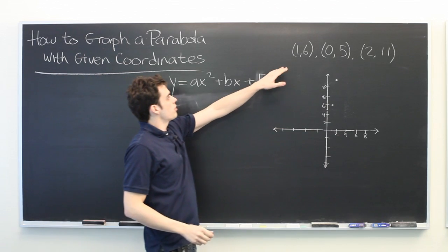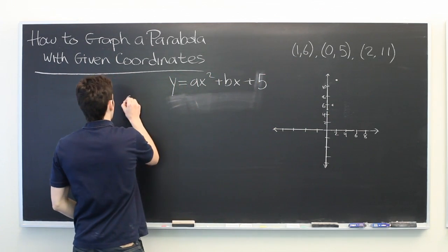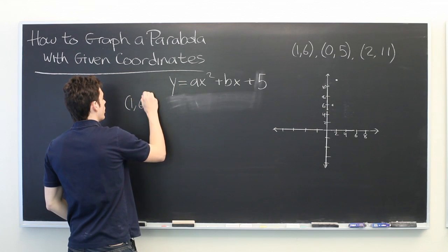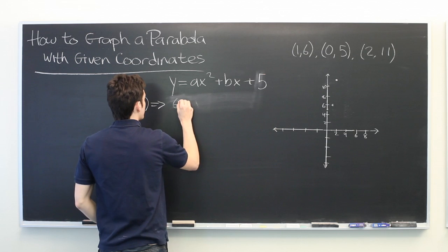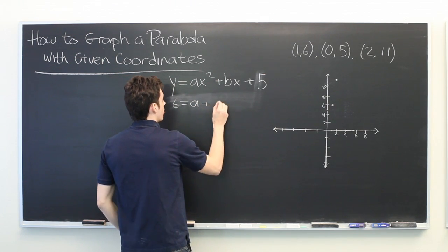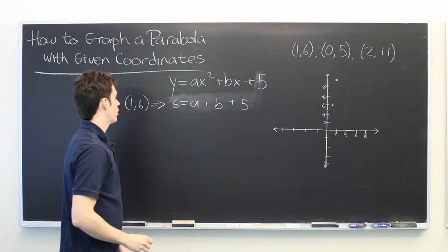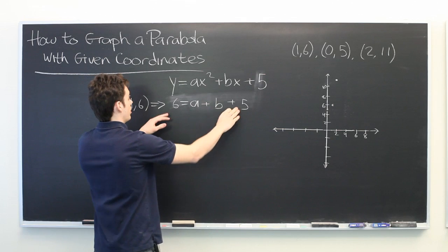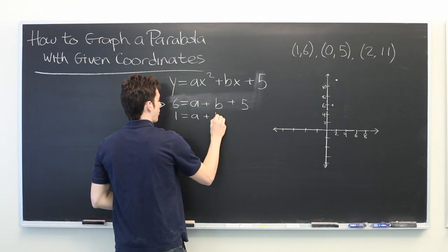So let's do the same for these two points and see what information that tells us. When we plug in 1 comma 6, we get that 6 is equal to a times 1 plus b times 1 plus 5. Which we can rewrite. We combine like terms. We get 1 equals a plus b.